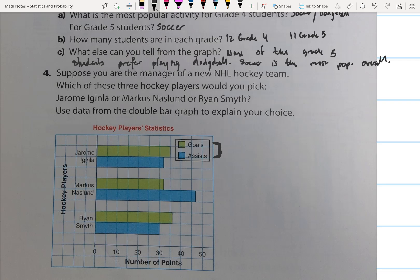Just a playmaker and just a wonderful hockey player. If we were just looking at goals and assists, who would you want? Well, Marcus Naslund has about 43 assists and about 32 goals. Jerome Iginla's got 35 goals and 31 assists. And Ryan Smith also has about 36 goals and about 30 assists.